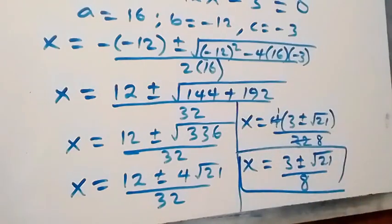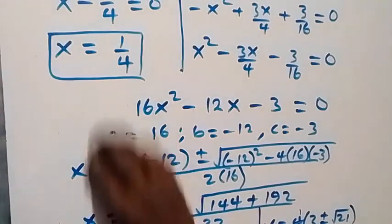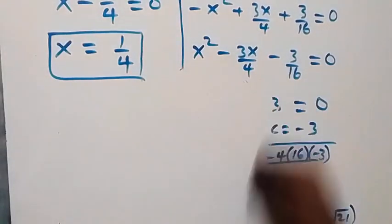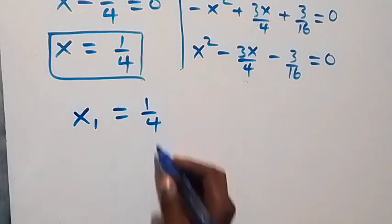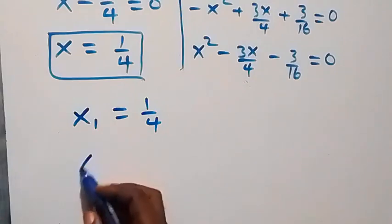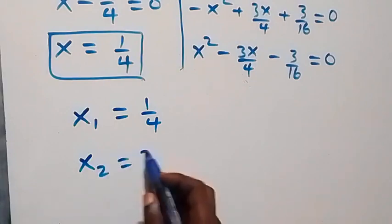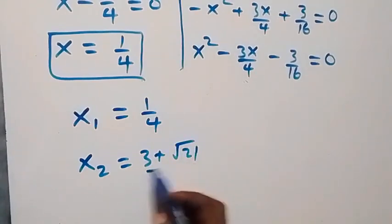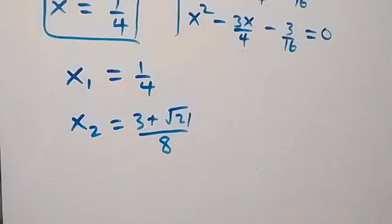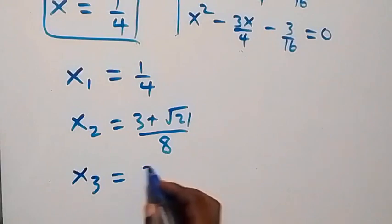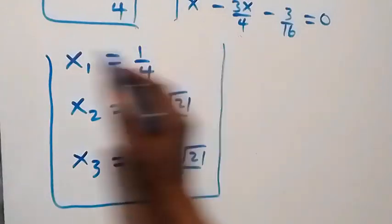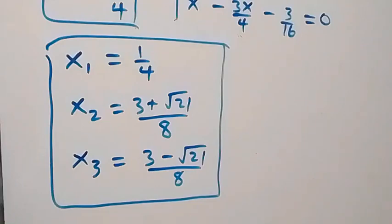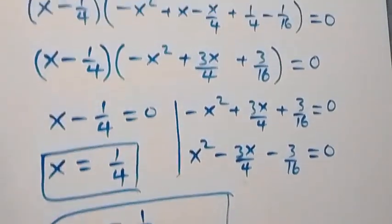We have three solutions in total: x₁ equals 1 over 4, x₂ equals (3 plus root 21) over 8, and x₃ equals (3 minus root 21) over 8. Thank you for watching — please subscribe, turn on the notification bell, share this video, and give a thumbs up. See you next class!